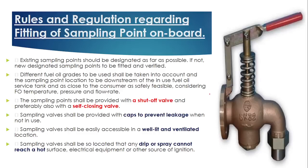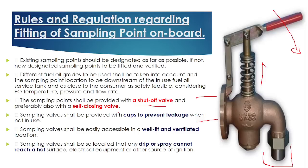Whenever you are installing this sampling point, the first thing is that the valve you install should be self-closing. It should preferably be a self-closing type with a cap — like this — to prevent leakage and drip. After that, where it should be installed: it should be in a properly ventilated location, and whenever you choose the location, it should be in such a place that any dripping or spraying cannot reach electrical equipment, because it can cause an electrical fire hazard.